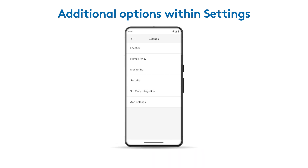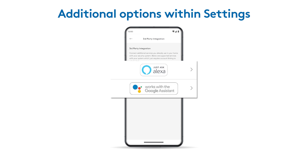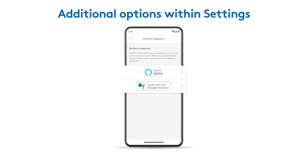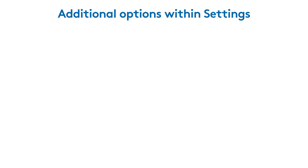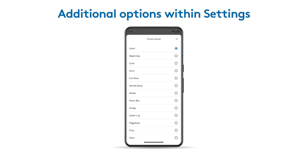Use third party integration to connect to services that you already use in your smart home. And under app settings, you can enable notifications and choose system sounds.